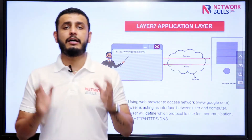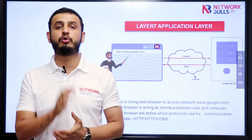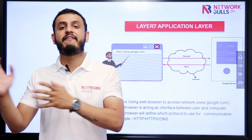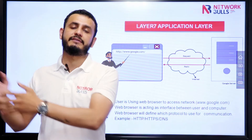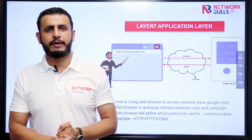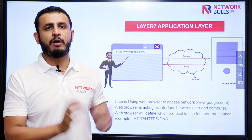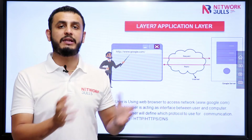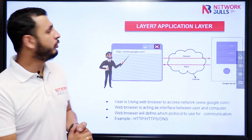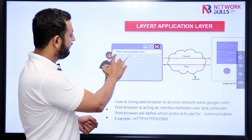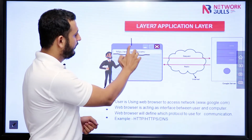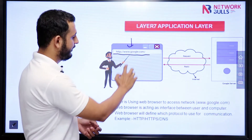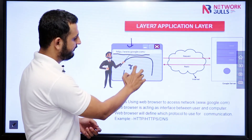The application layer is used to provide an interface between the user and the computer. We have some applications which are developed by application developers, like a web browser. I think all of you know what a web browser is. A web browser is software which you use to interact with a network. In your web browser you write something like www.google.com and you get a web page — Google, something like that.